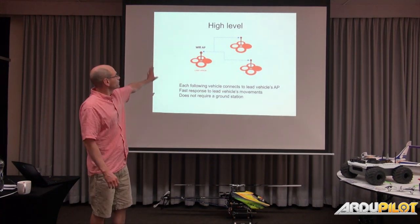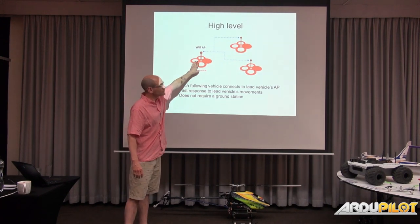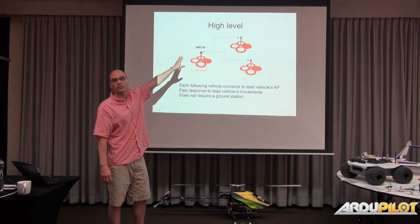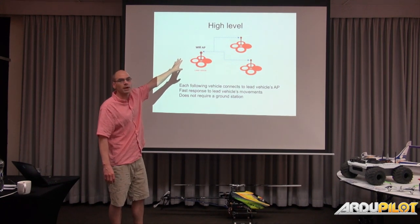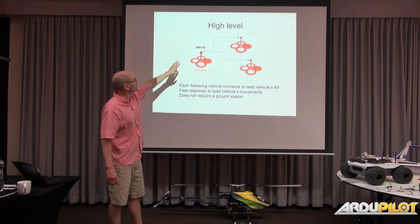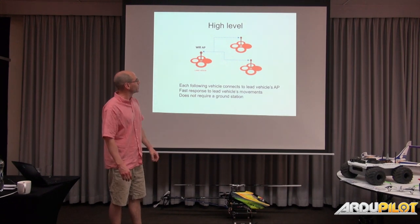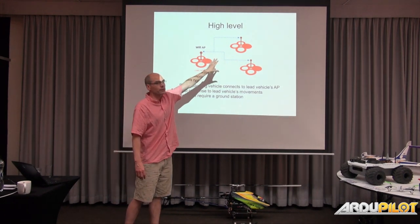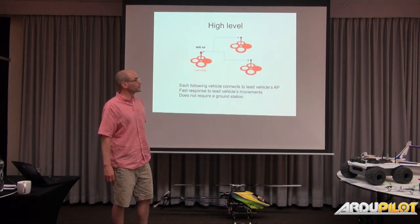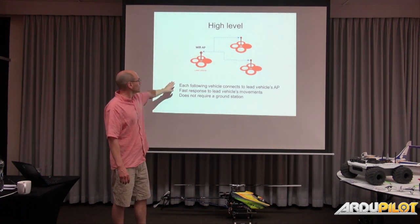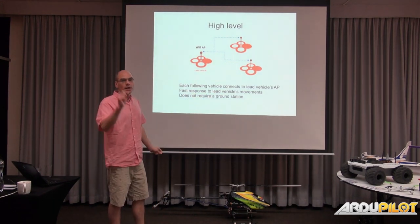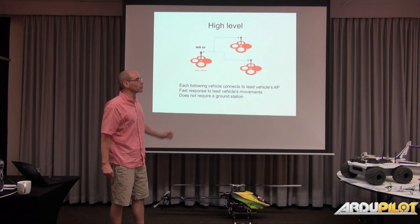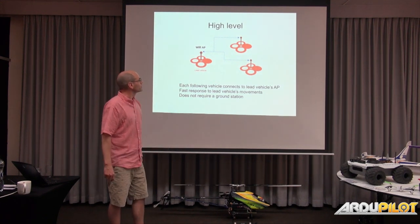The way it works at a very high level: we have a lead vehicle, and it creates an access point — or some other radio that can also be used. It doesn't really matter if it's Wi-Fi, but we're going to do a demonstration using a Wi-Fi access point. The following vehicles all just see that access point and they connect. One of the nice things we get out of this is a fast response — there's no intermediate communication going down to the ground station and then back up to the drone. It's directly from lead vehicle to the following vehicles.